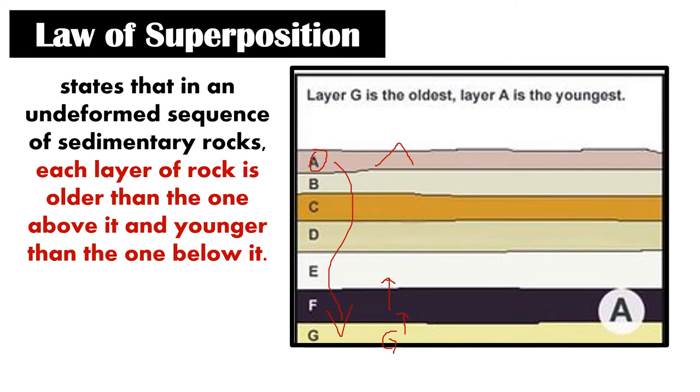If we arrange this from oldest to youngest, we have G, F, E, D, C, B, A.